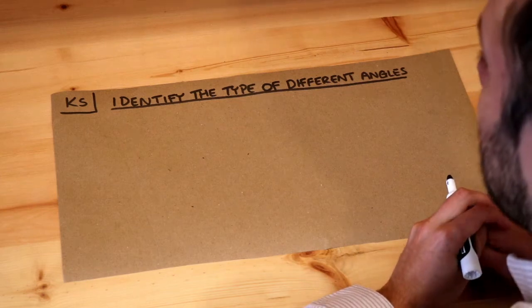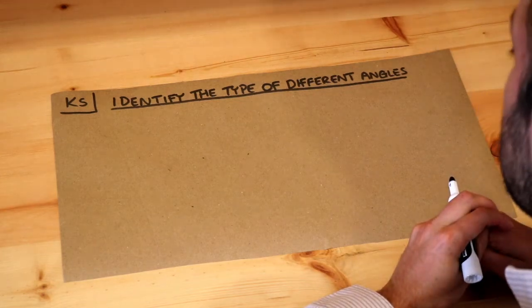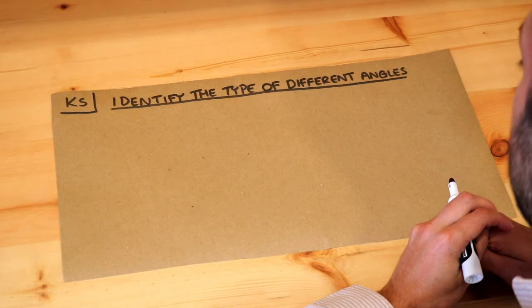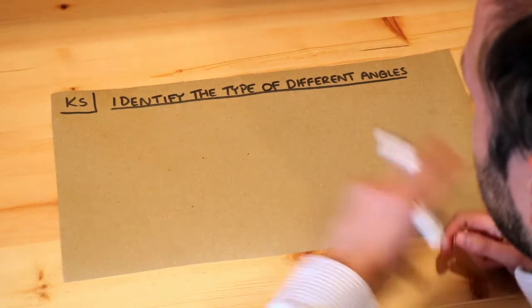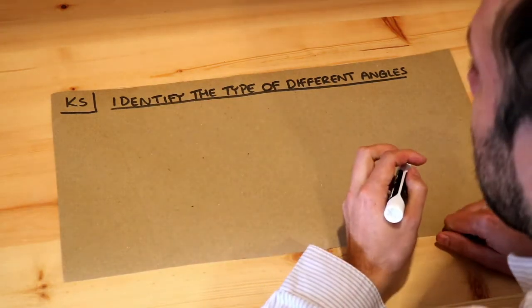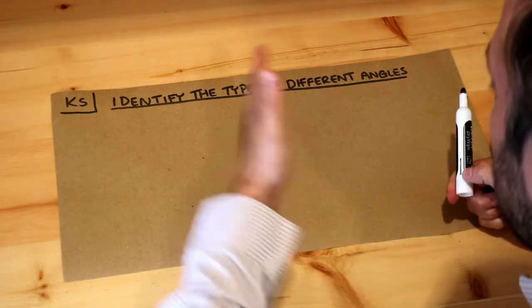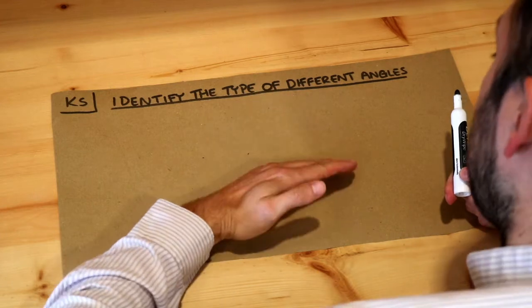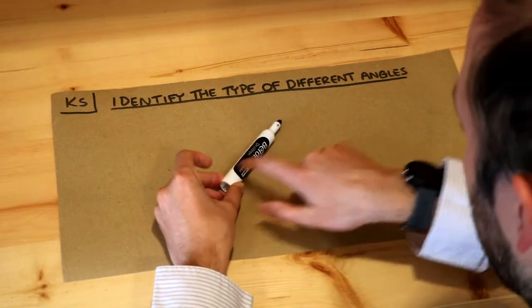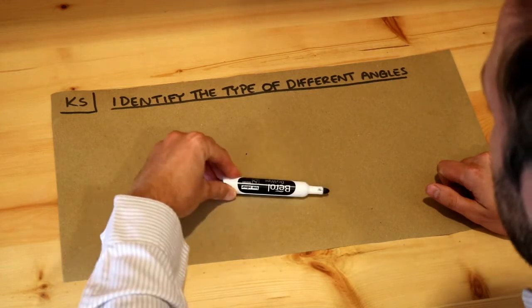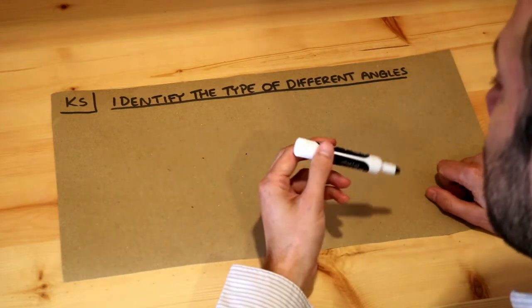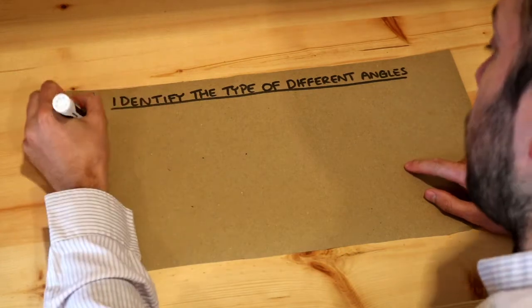Hello and welcome to this Dr Ross Maths key skill video on identifying the type of different angles. Now there's many things we want to measure in maths, for example the length of something or the weight of something, but sometimes we want to measure the amount that we're turning by. So if I have my pen here and my pen was to spin a certain amount, how do we measure the amount that something is spinning by? And that's what angles are for.